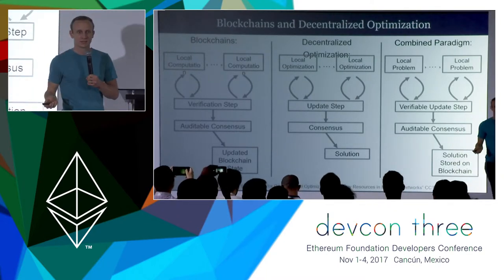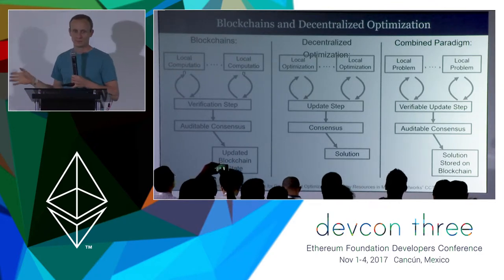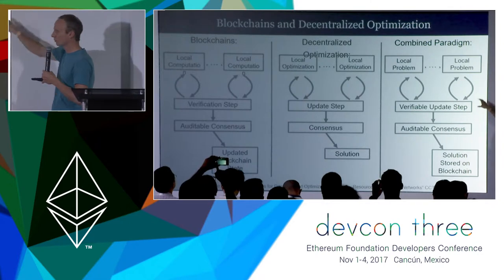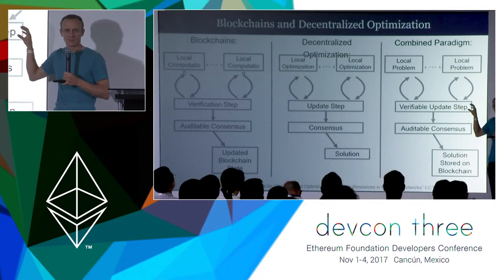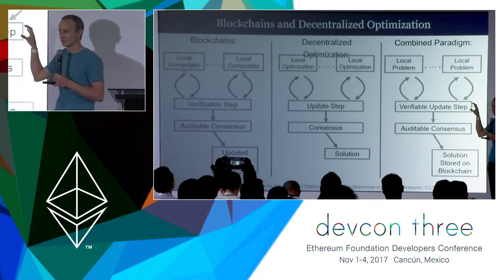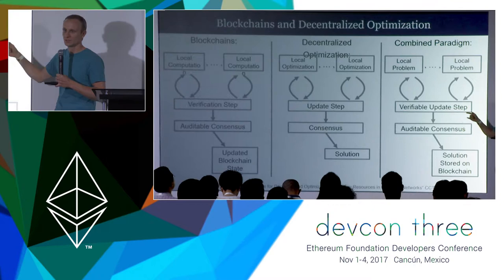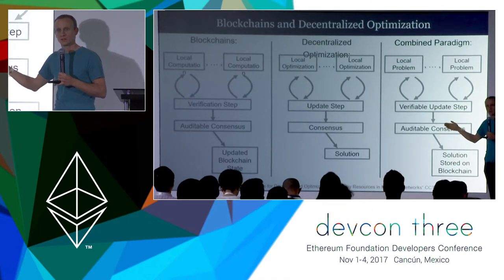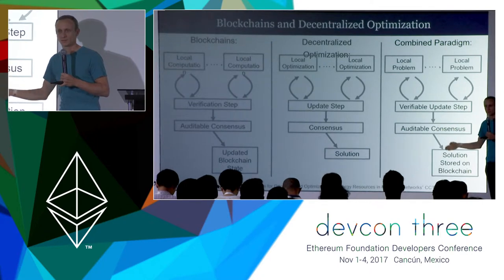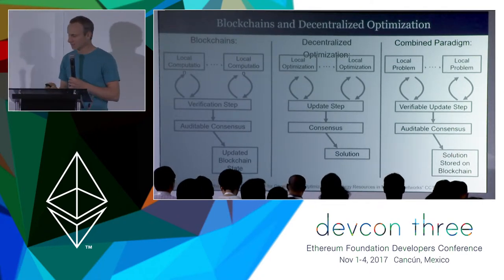The research that I've been doing highlights this similarity to create a combined model where these local update steps coordinate with a smart contract to process a secure, verifiable update step. Ultimately reaching a solution that is auditable — you can see how you got to that solution, you can prove the optimality of that and know whether or not there were attacks along the way — and then that solution can be stored on the blockchain for everybody to access.